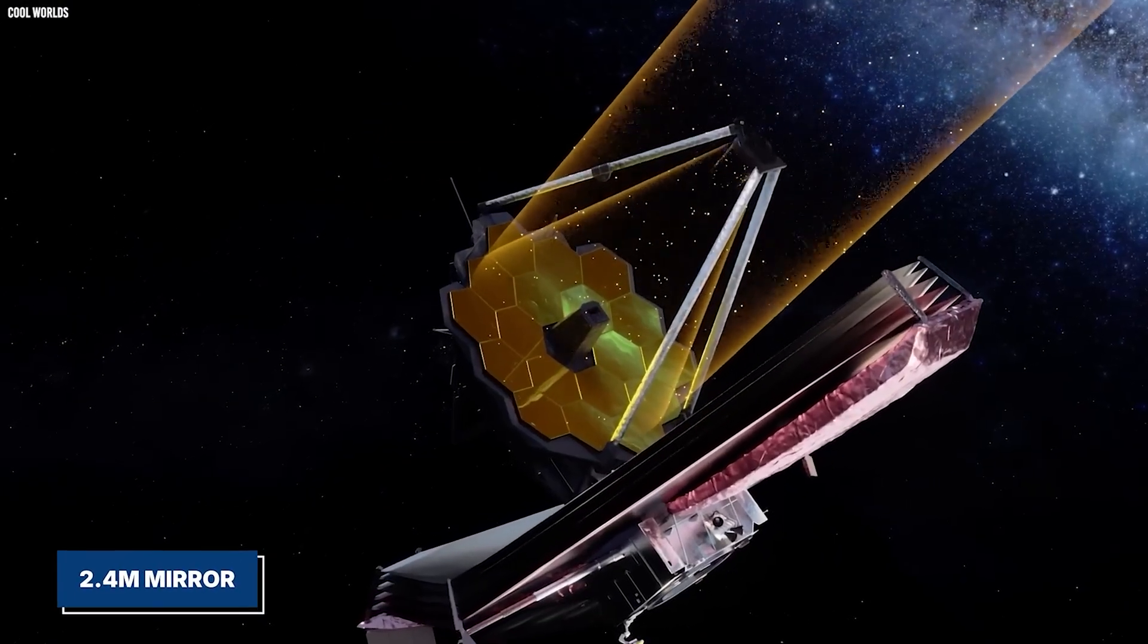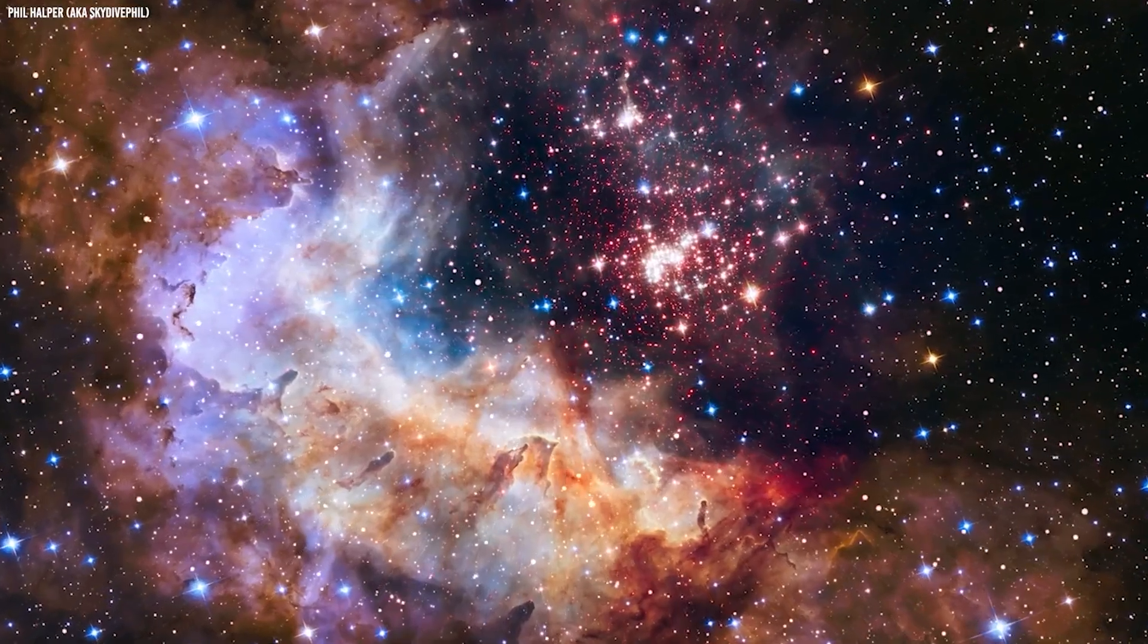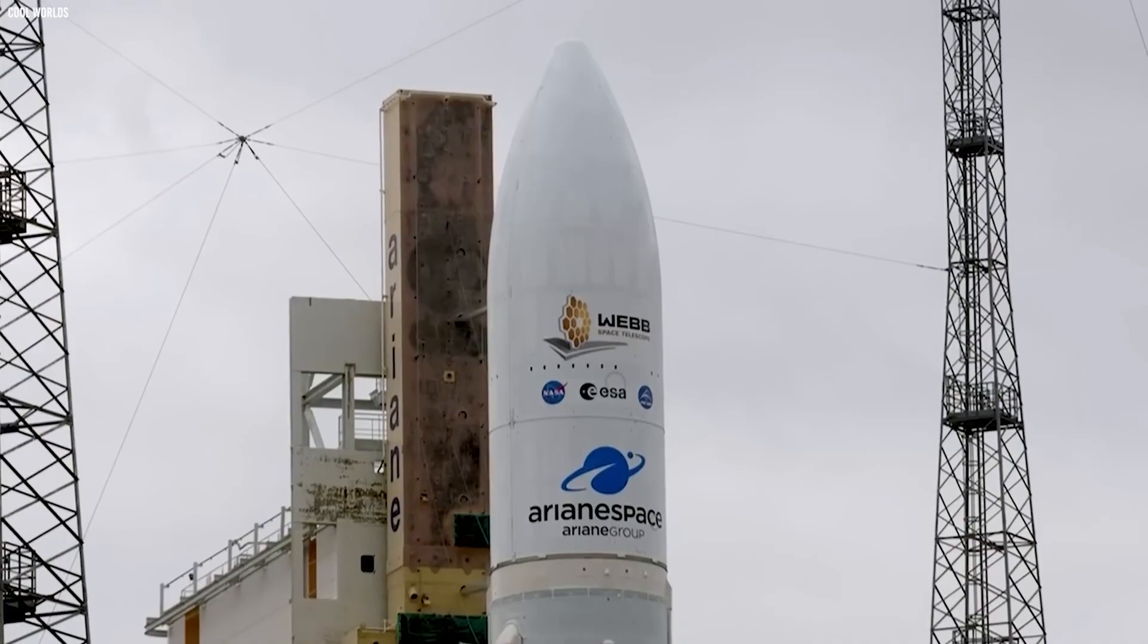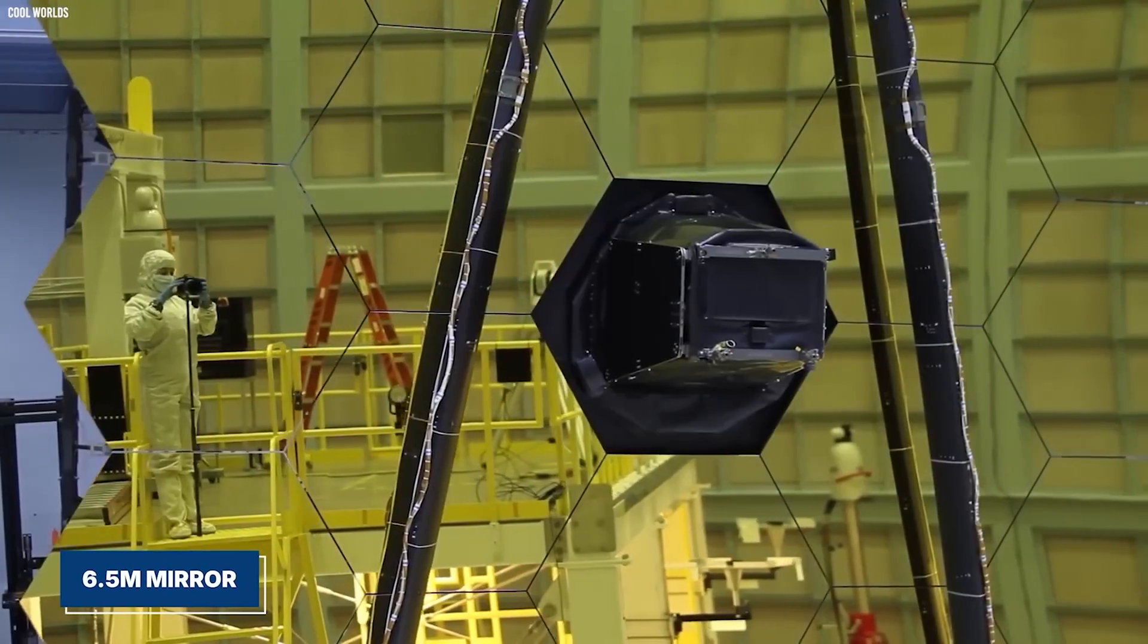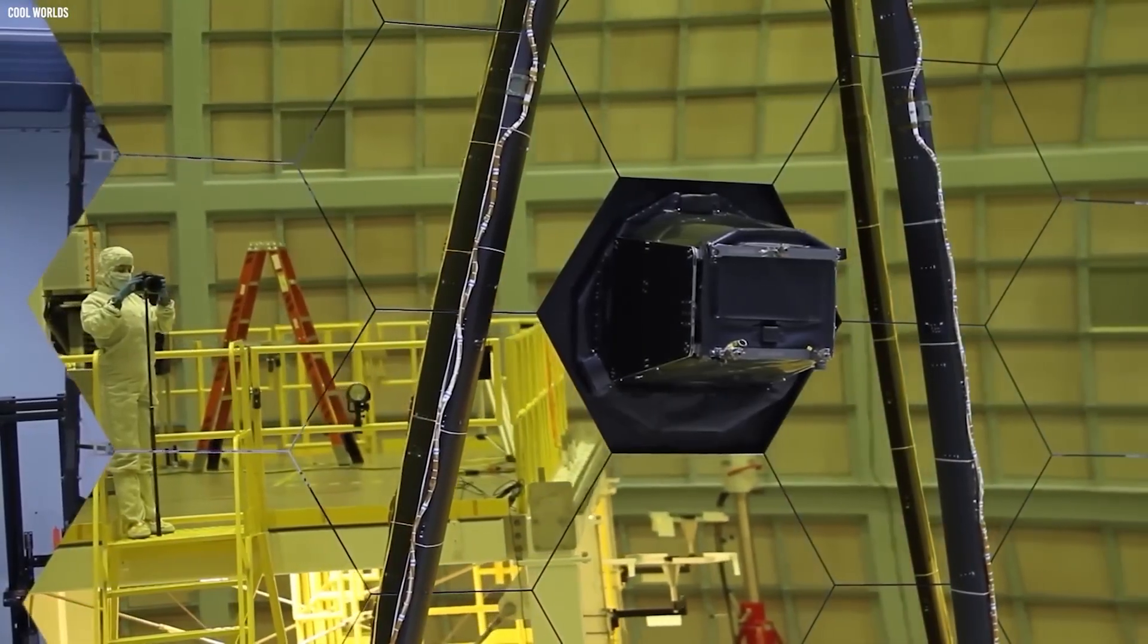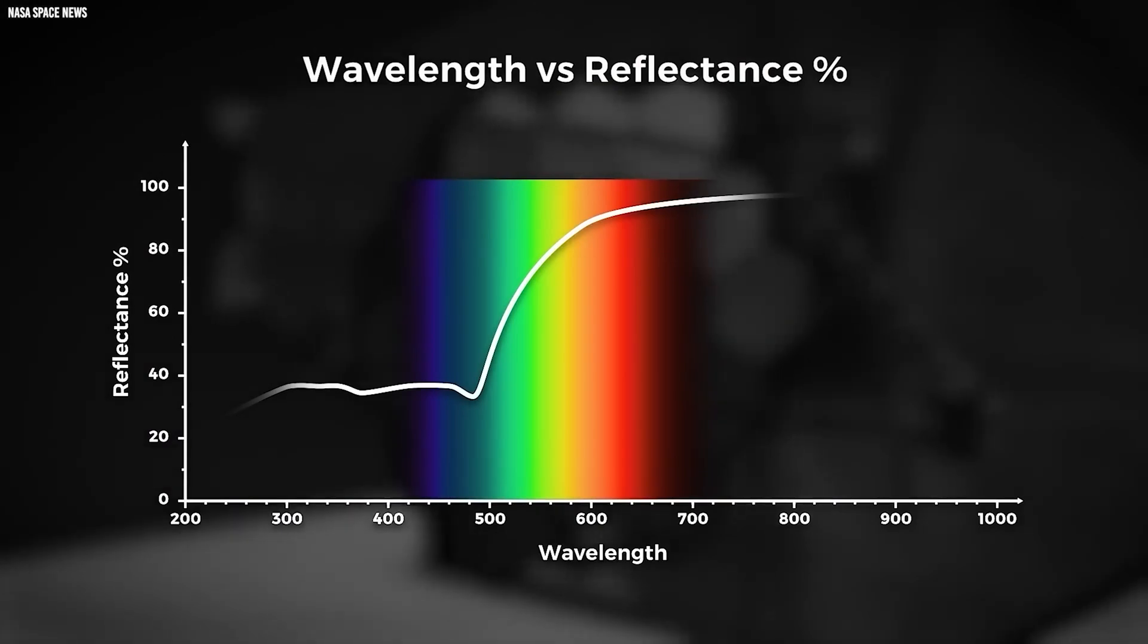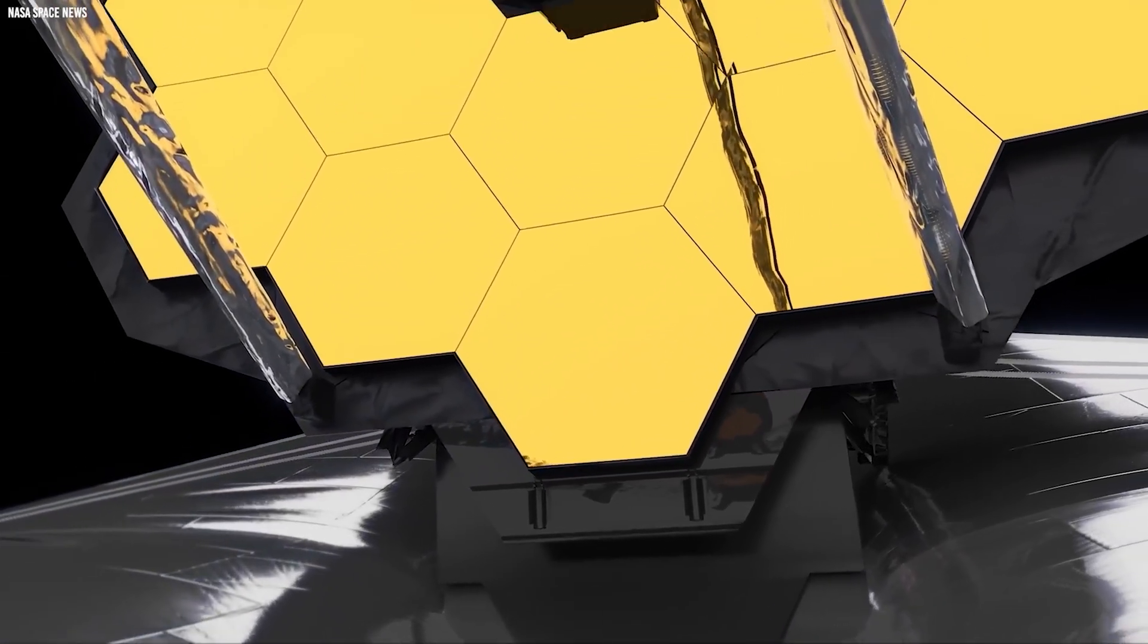Hubble, with its 2.4-meter mirror and remarkable engineering, had carried us across huge cosmic distances. But even its capabilities had boundaries. Then came the launch of the Webb telescope. With a massive 6.5-meter mirror and instruments built to read the faint, stretched, infrared glow of the universe's earliest objects, Webb didn't just advance Hubble's legacy, it completely reset the scale.